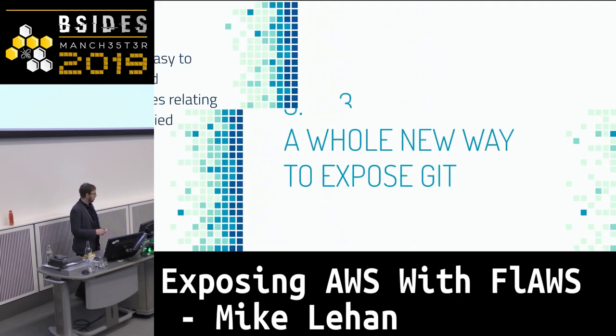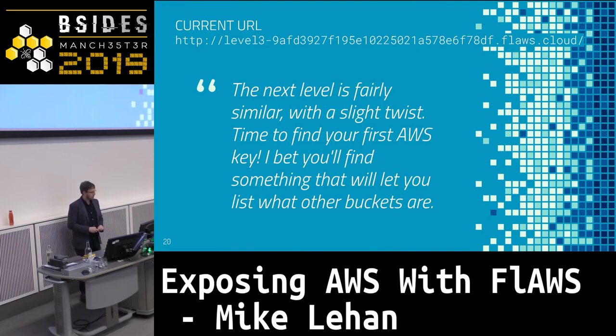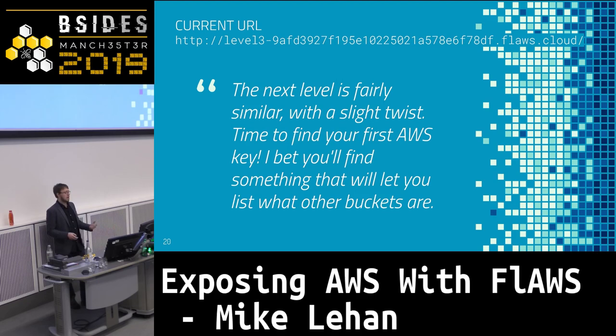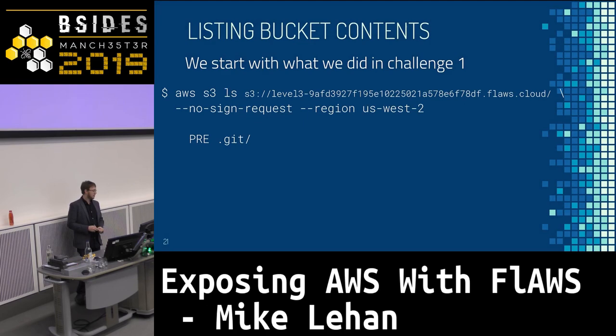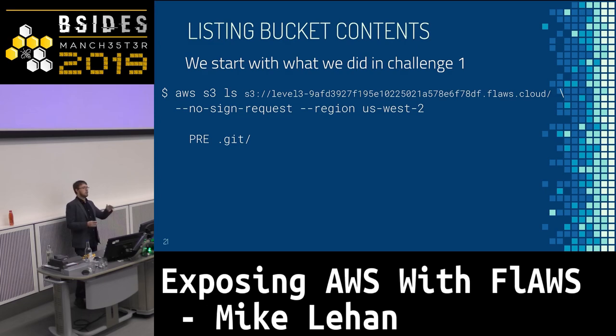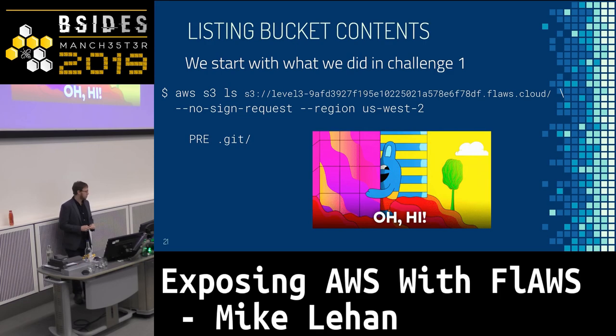On to number three: a whole new way to expose Git. This is similar to the previous levels, but we're going to find an AWS key. AWS keys are really the bread and butter of any attempt to hack or test AWS accounts — if you have a key, you can probably do something someone doesn't want you to do. We do the same thing as challenge one: list the bucket contents with --no-sign-request. In our output, we see a prefix called .git.